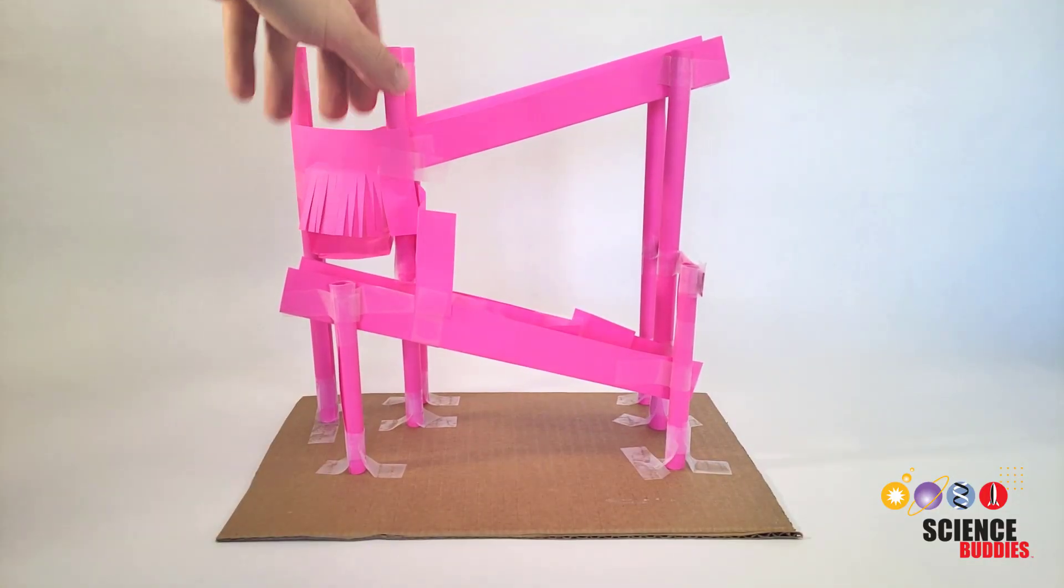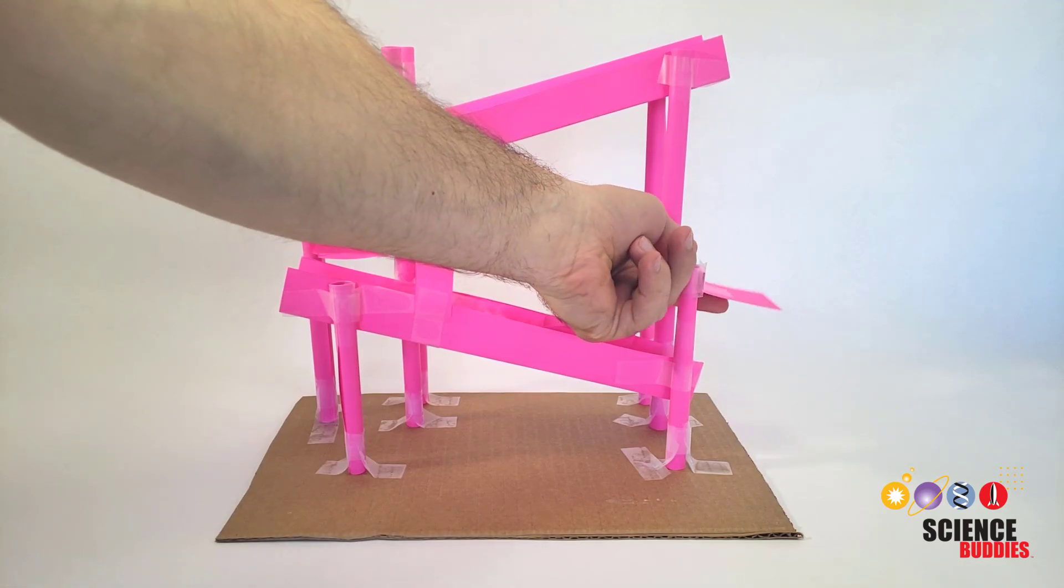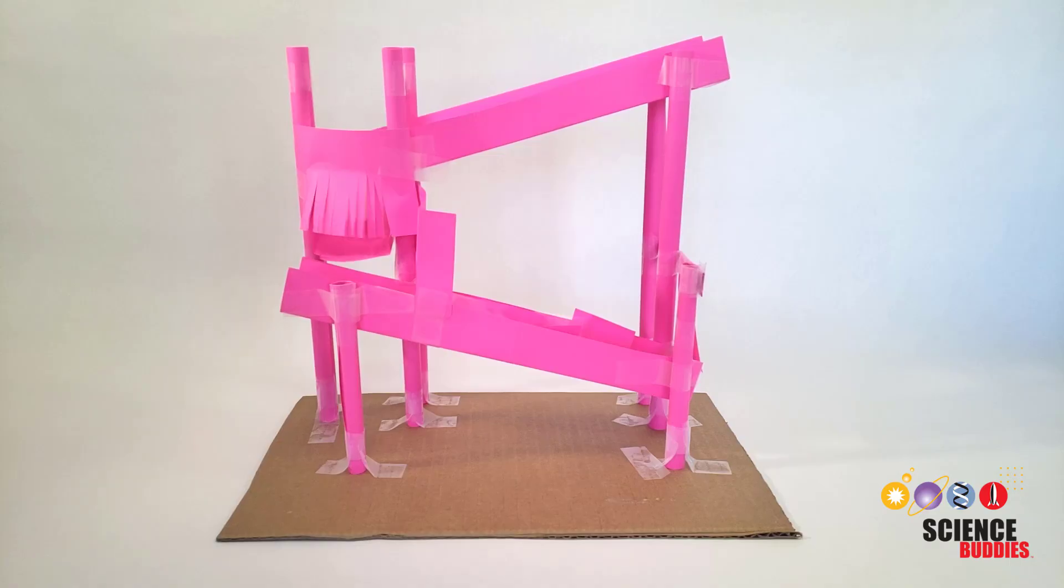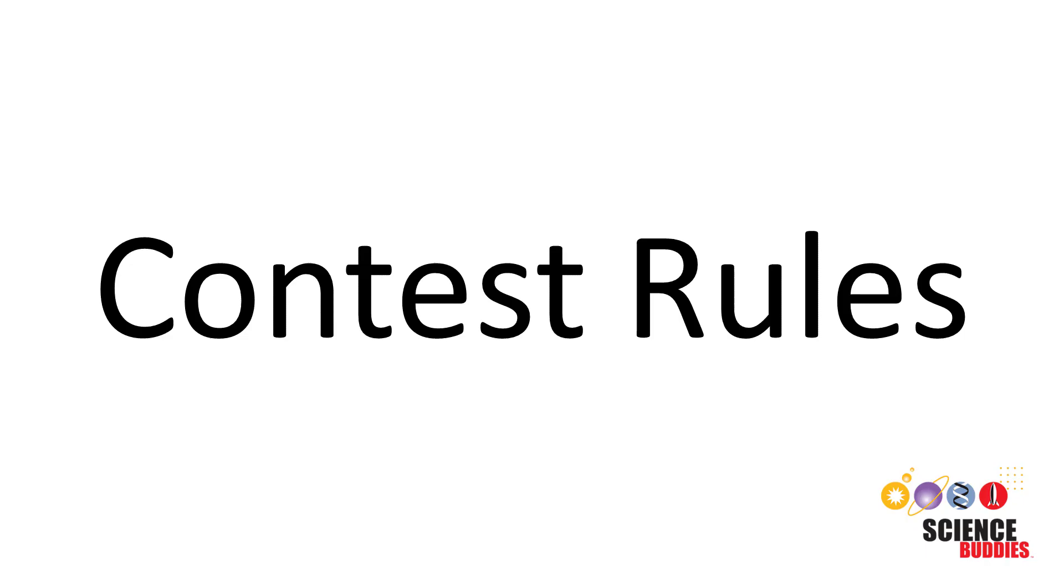Instead, you'll need to make some adjustments to your ball run or change the design until it works properly. Iteration is an important part of the engineering design process. There are some rules you'll need to follow if you want to enter your ball run in the 2026 Science Buddies Engineering Challenge for a chance to win a cash prize for your school or nonprofit organization.